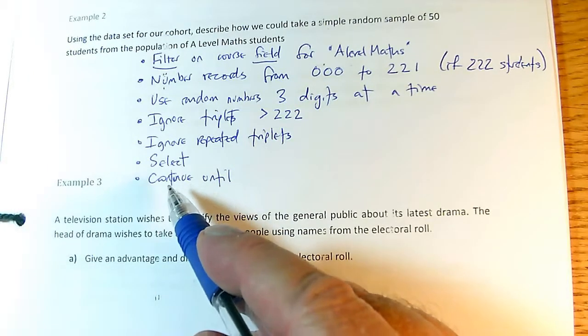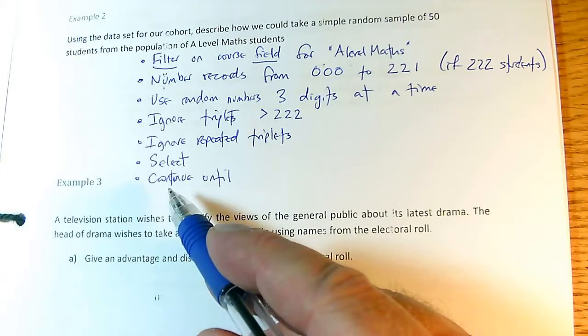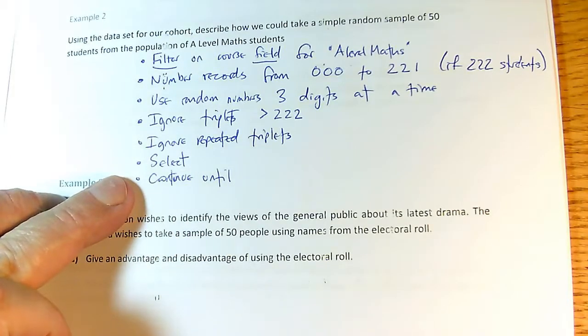Blindingly obvious step, the next one, but you have to state it. We have to select the student or the record in the database corresponding to each triplet.